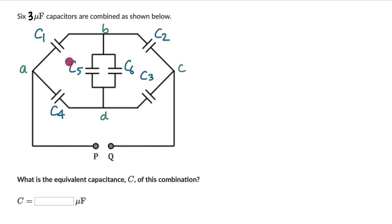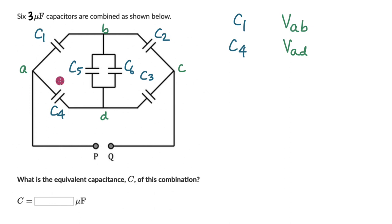This combination is connected across PQ. Let's understand the potential difference across each capacitor. Across C1 the potential difference is VAB, and across C4 it is VAD. The good thing is all capacitors have the same magnitude — 3 microfarads throughout. So the amount of potential drop in one branch should be the same as in the other branch, which means the potential at B should equal the potential at D.